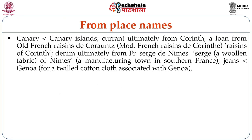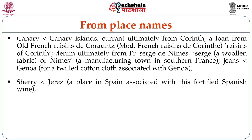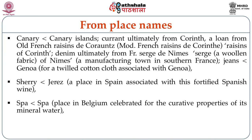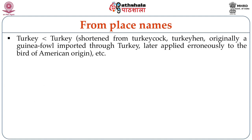From place names also we get new names. 'Canary' from the Canary Islands; 'currant' ultimately from Corinth. Another interesting name is 'jeans', from 'Genes' (Genoa), for a twill cotton cloth. 'Sherry' from 'Xeres', a place in Spain associated with this fortified Spanish wine. 'Spa' is a place in Belgium celebrated for the curative properties of its mineral water. 'Turkey' is shortened from 'Turkey Cock' or 'Turkey Hen', originally a guinea fowl imported through Turkey, later applied erroneously to the bird of American origin.